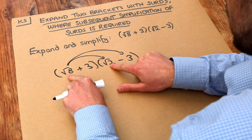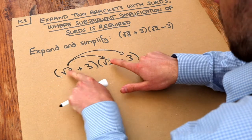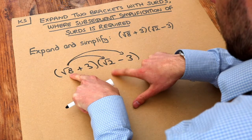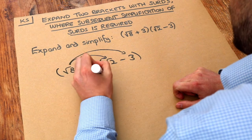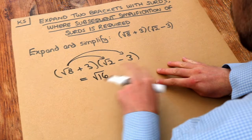Well we've got the root 8 times the root 2. Remember when we multiply two surds together we just multiply the numbers. Root 8 times root 2 is root 16. And let's not simplify it yet. We'll do that on the next line.